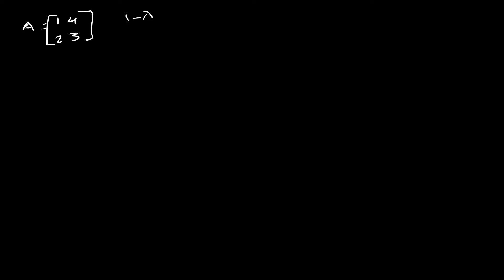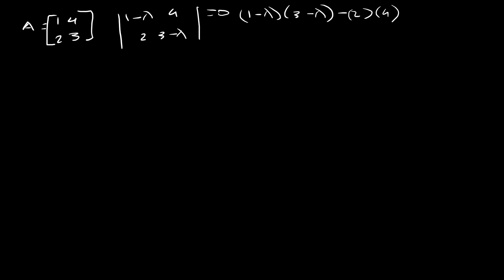So we set up 1 minus lambda, 4, 2, 3 minus lambda, and that determinant is equal to 0. So 1 minus lambda times 3 minus lambda minus 2 multiplied by 4 equals to... this is 3 minus lambda minus 3 lambda plus lambda squared minus 8 equals to 0.